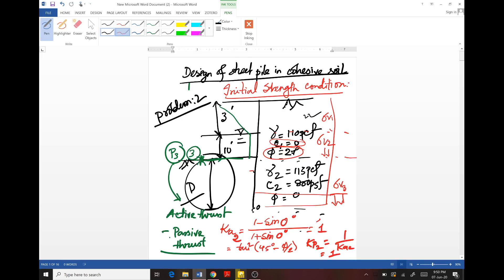In the next lecture we will solve the problem for final strength condition. For initial strength condition we have achieved a value of embedded length of sheet pile equals to 5.54 feet. For final strength condition we will again check, we will again determine all the parameters, draw the earth pressure diagram again, we will solve the lateral earth pressure and corresponding horizontal pressure.